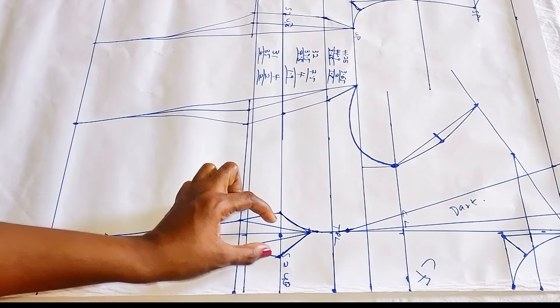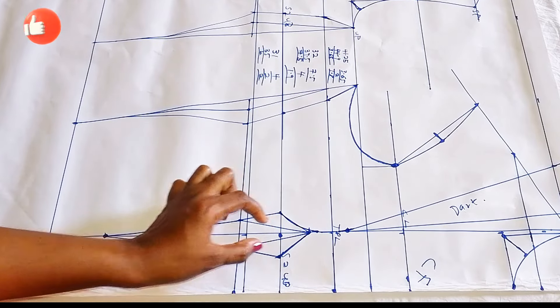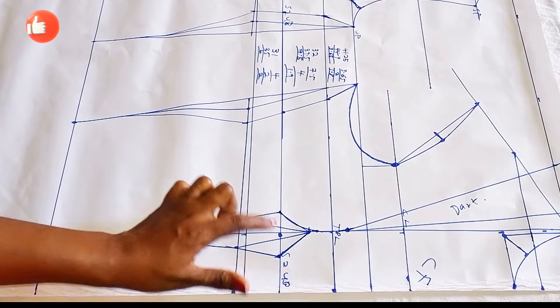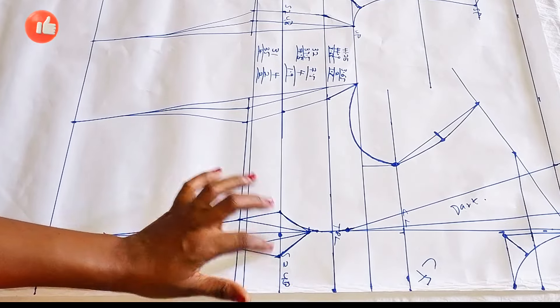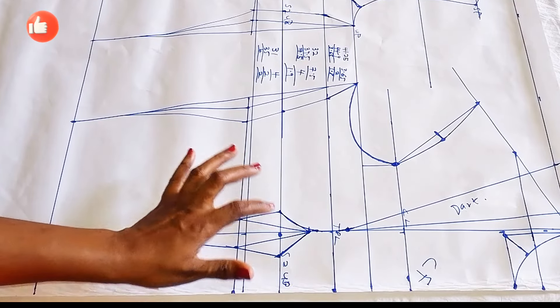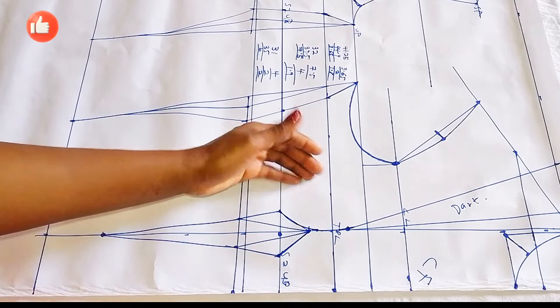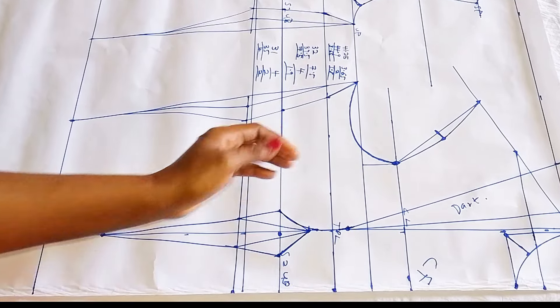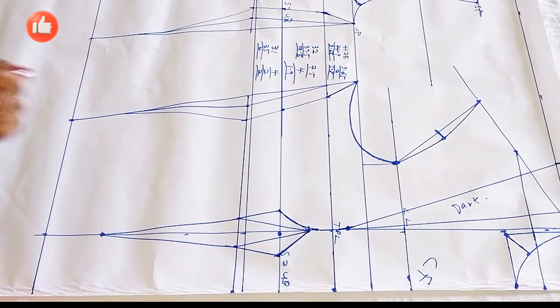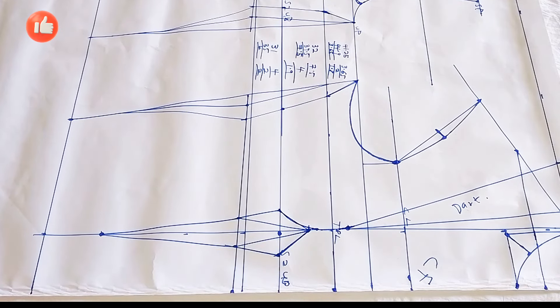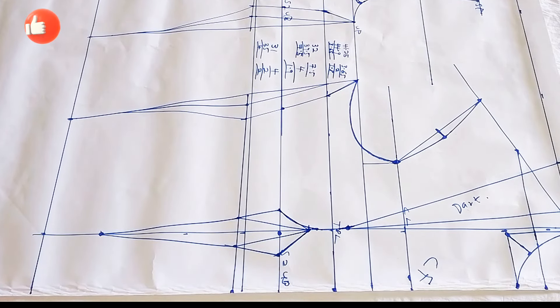For a bustier, I'm going to go ahead and shape it on this point — I'm going to shape it as much as I want. The more shaping I give it on this side of the bust, that is what gives us our bustier. So I'm going to go ahead right now.